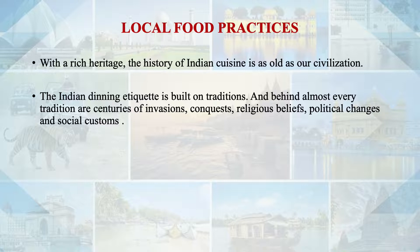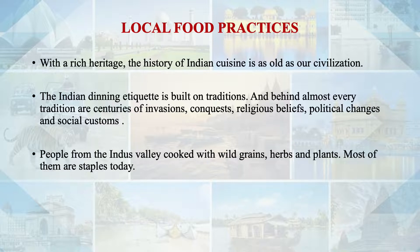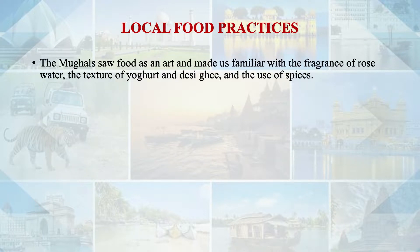For example, people of the Indus Valley even cooked with wild grains, herbs and plants. The food of the Mughal era had fragrances of rose water, yogurt and desi ghee, and use of spices was promoted by them in a big way. The tradition of tea was introduced by foreigners, Portuguese made red chili popular, and the British helped establish dining decorum.